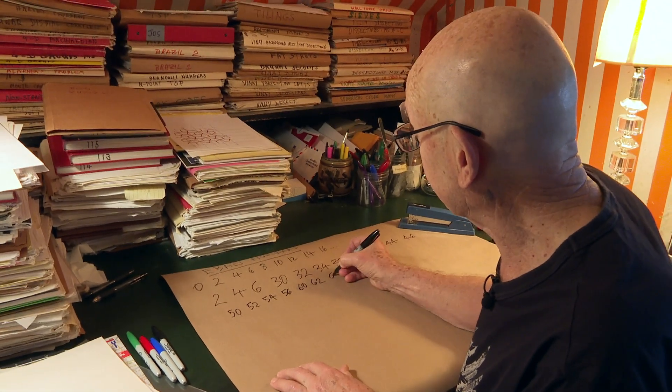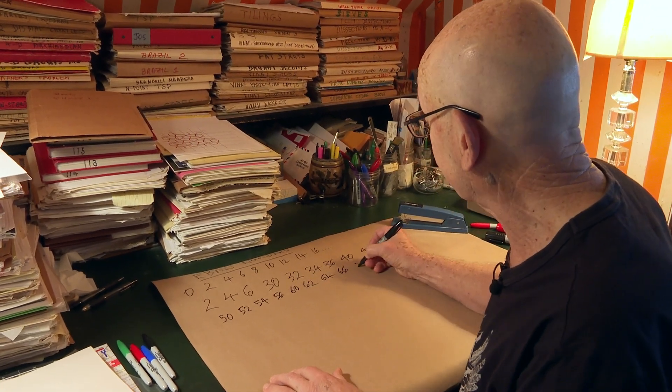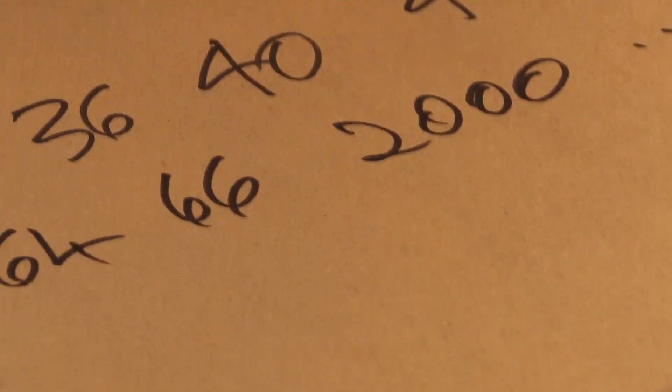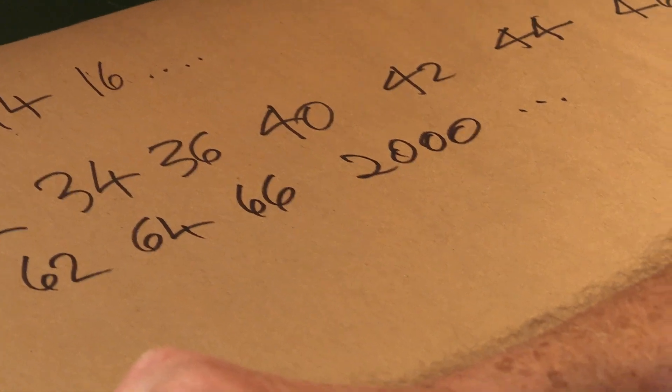Let me continue. 62, 64, 66, 2000. Those are the even numbers. 2000! That was a jump. Why are those the even numbers?